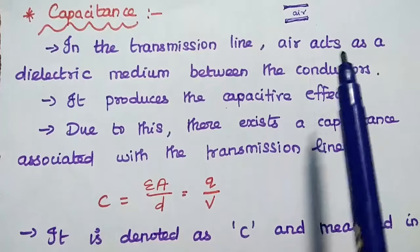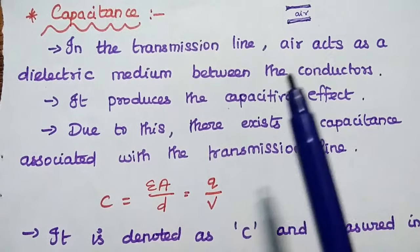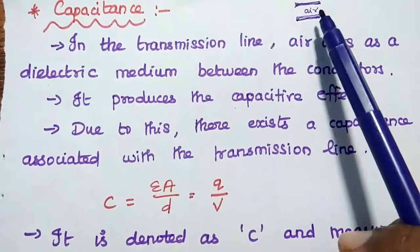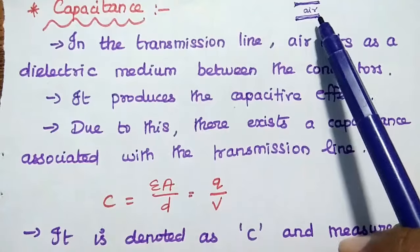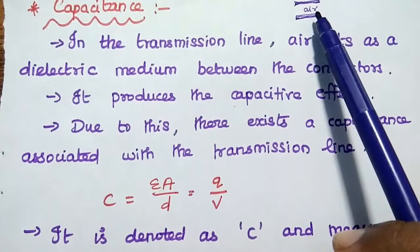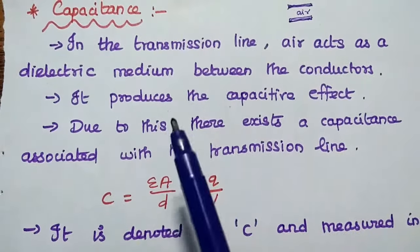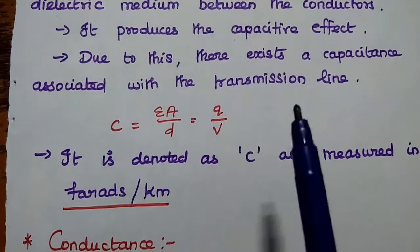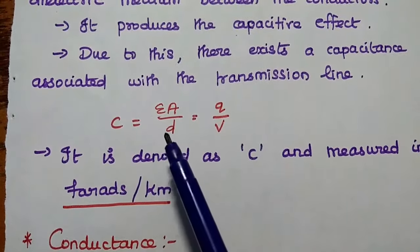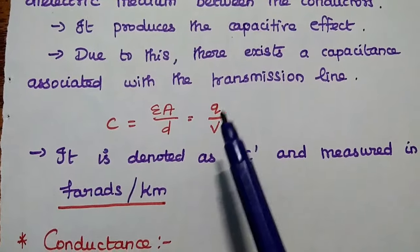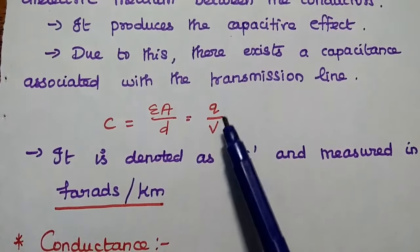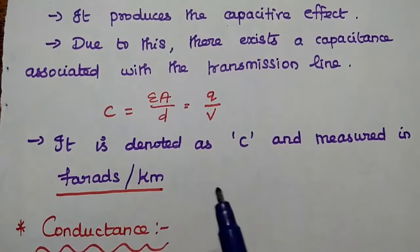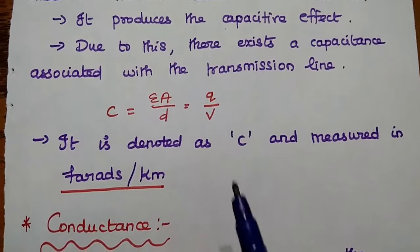The next line parameter is capacitance. In the transmission line, air acts as a dielectric medium between the conductors. Consider two parallel wire transmission — air is acting as a dielectric medium. It looks like a capacitor because it consists of two conductors in close proximity, insulated from each other, producing a capacitive effect. Therefore, there exists a capacitance associated with the transmission line, denoted as C, equal to epsilon-A by D, also defined as Q by V — the charge per applied voltage. It is measured in terms of Farads per kilometer.